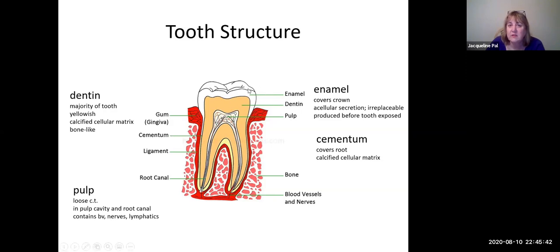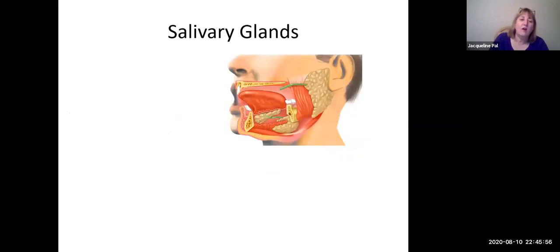And basically what that means is you can't have pain anymore from that tooth because it's not innervated anymore. All right, now that we're done with the teeth, let's talk about salivary glands. And this is interesting—what you didn't know is that we have three sets of salivary glands, so we have three on the right and three on the left.